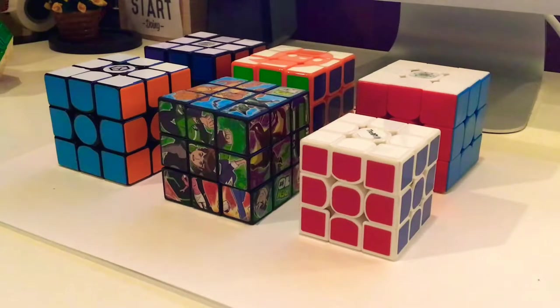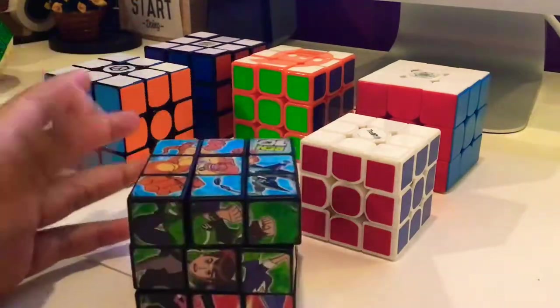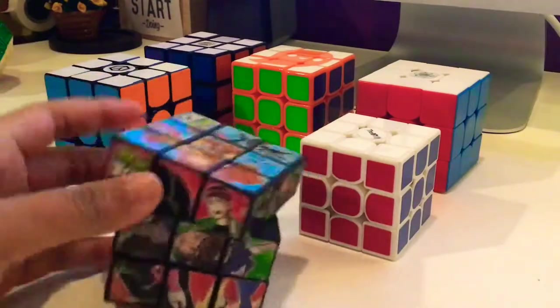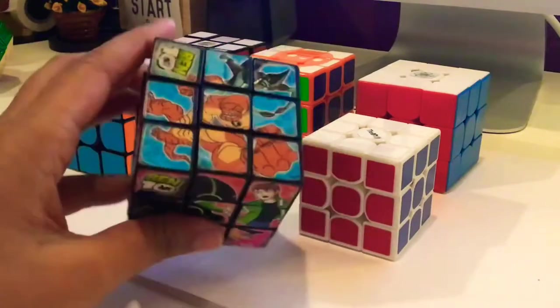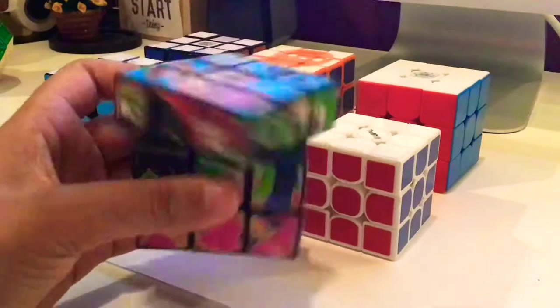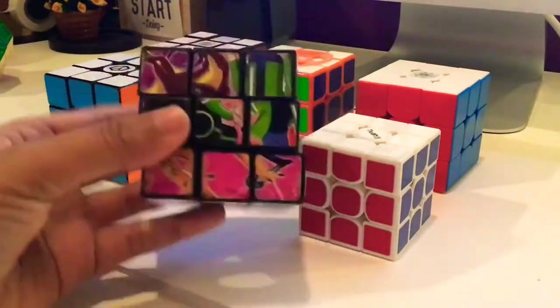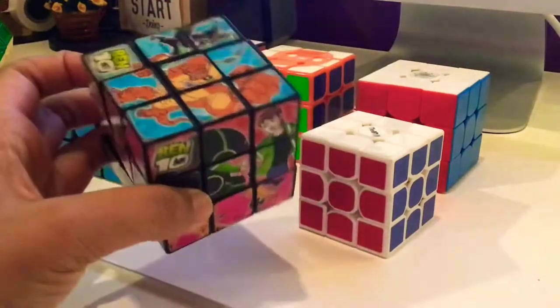I'm going to be starting off with my least favorite. My least favorite is this Ben 10 picture cube, and I already did a video on it where I added Lubicle Silk, so you guys should totally check it out. The turning is not that good as you have to use two hands, but after adding Lubicle Silk I'm able to finger trick on it. Overall, the color recognition is really hard and it's really hard to solve with all the pictures on it. That's why it's my least favorite.